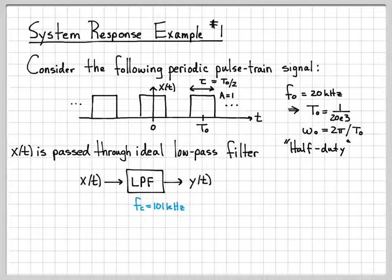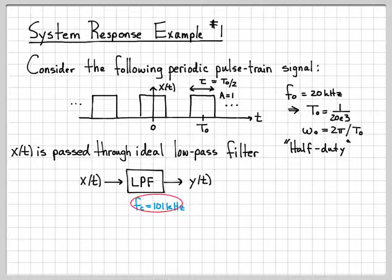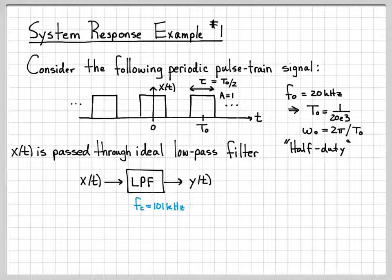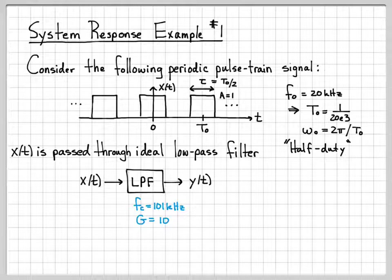The first parameter is fc. This is what's called the cutoff frequency of the low-pass filter. And for this particular problem, we've set fc equal to 101 kilohertz. So that is what we call the cutoff frequency. And then the other property of this low-pass filter is its gain, which is equal to 10. So what do these numbers mean?